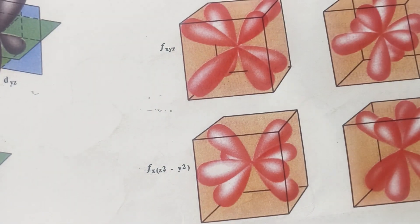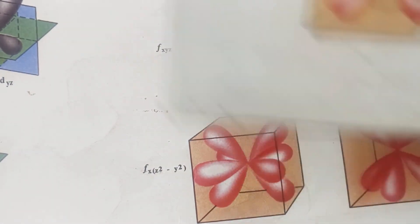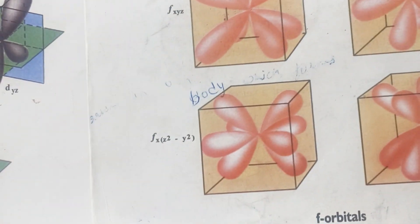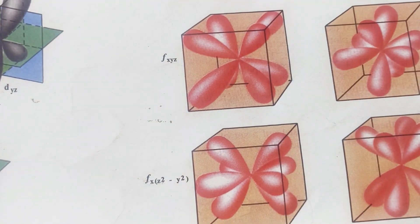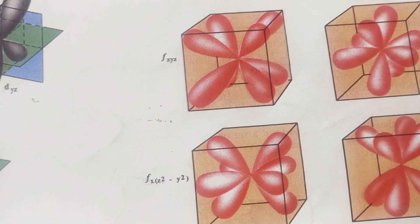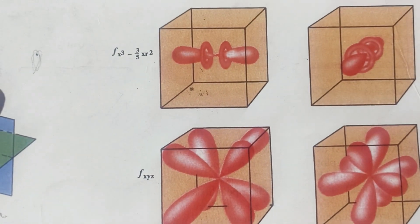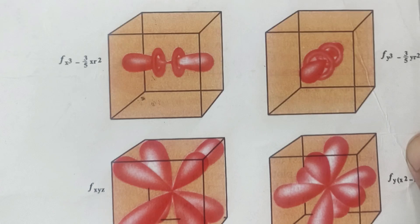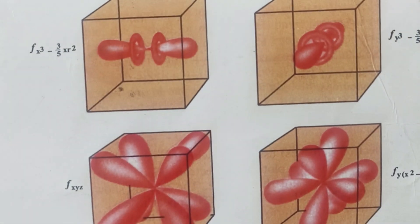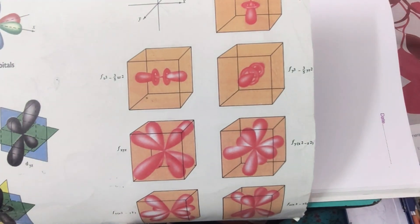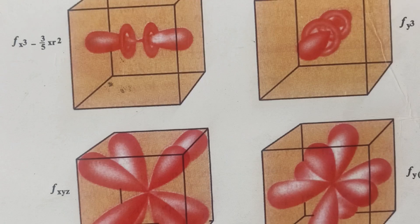So these are the seven f orbitals. As we know the importance of these orbitals when we are talking about the lanthanide contraction, because of the shape of the f orbital is diffused, means very complicated shape, and because of these shapes they are responsible for causing the lanthanide contraction.